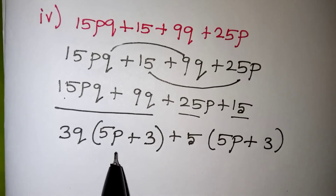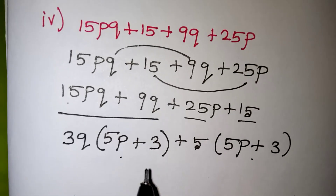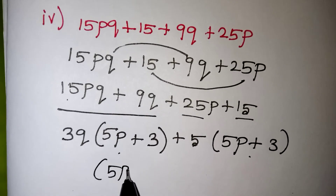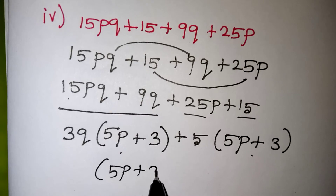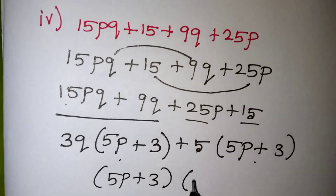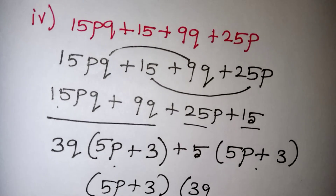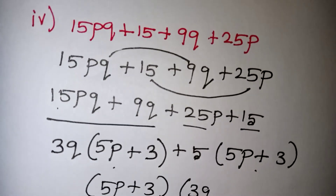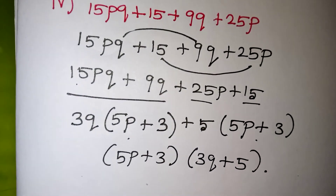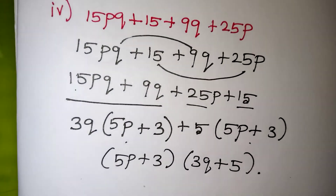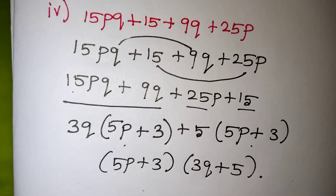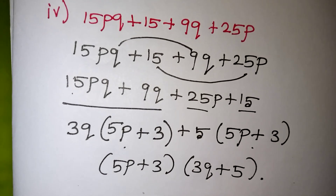Now (5p + 3) is common in both groups. Taking (5p + 3) outside, the remaining from the first group is 3q and from the second group is +5. So the final factorization is (5p + 3)(3q + 5). That is your correct factorization value. Thank you for watching — like our video and subscribe to our channel for more videos.